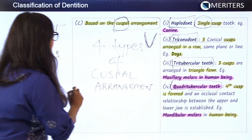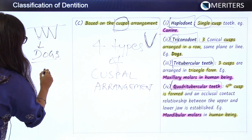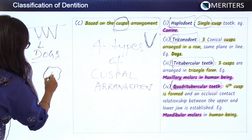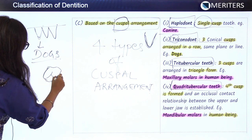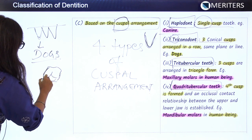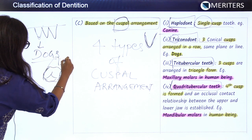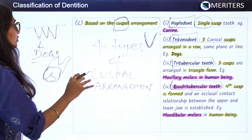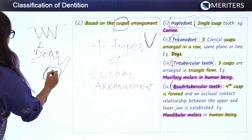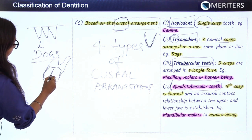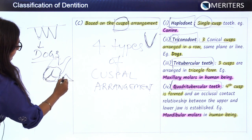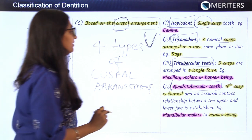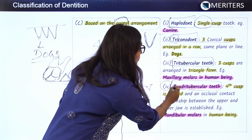Tritubercular teeth, on the other hand, have three cusps arranged in a triangle. Such arrangements can be seen in the maxillary molars in human beings. So they are again three cusps, but arranged in a triangular pattern, hence known as tritubercular teeth.